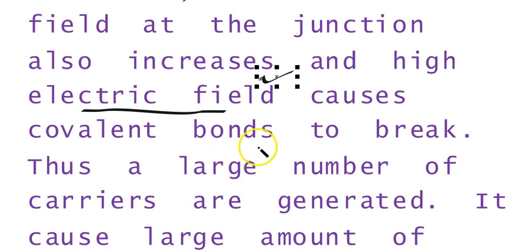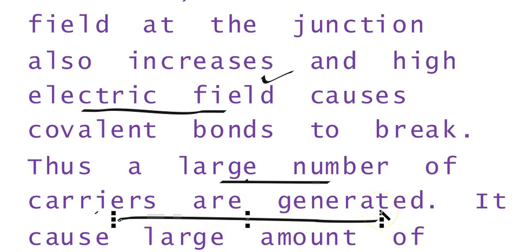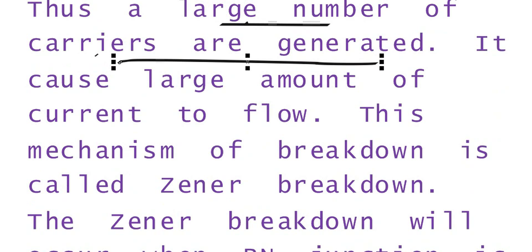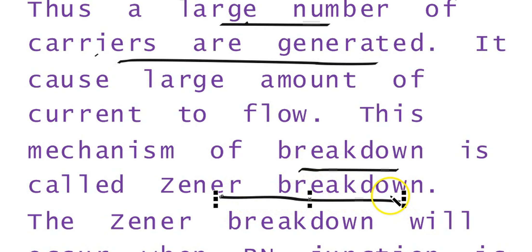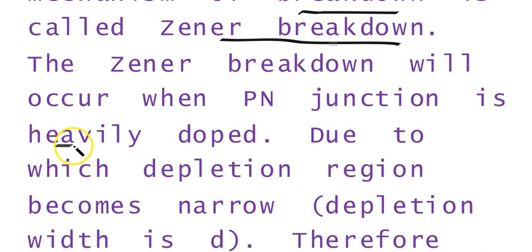There are no collisions of the carriers with the bonds or with other carriers. Only the carriers are generated because the electric field is sufficient to pull the carriers from the bonds. A large number of carriers becomes available and they cause a very large amount of current to flow. This mechanism of breakdown is known as Zener breakdown. Zener breakdown will occur when the PN junction is heavily doped. If it is heavily doped, the depletion region will be very, very thin.